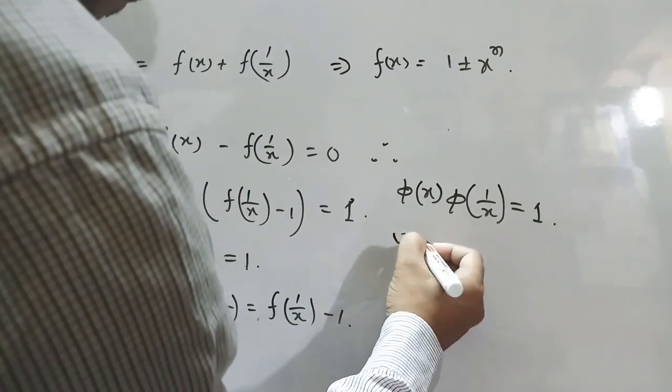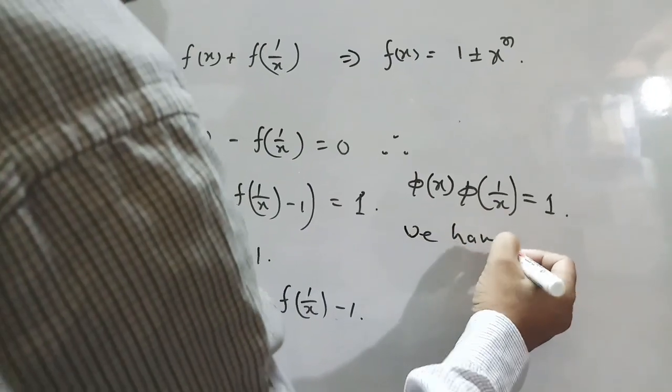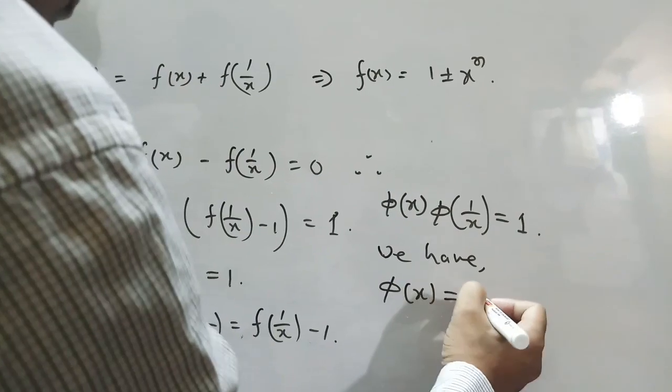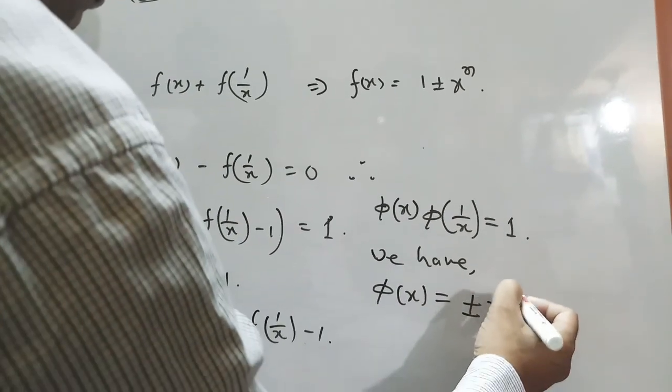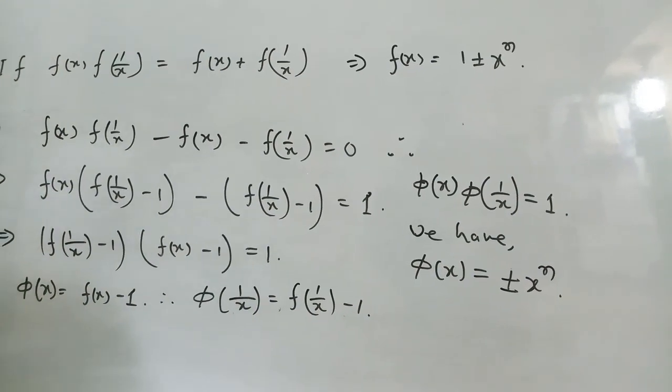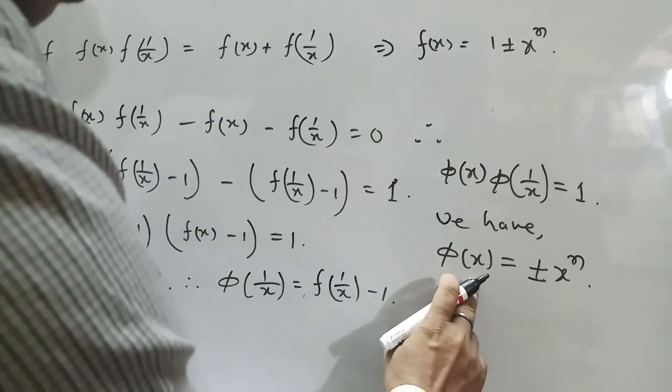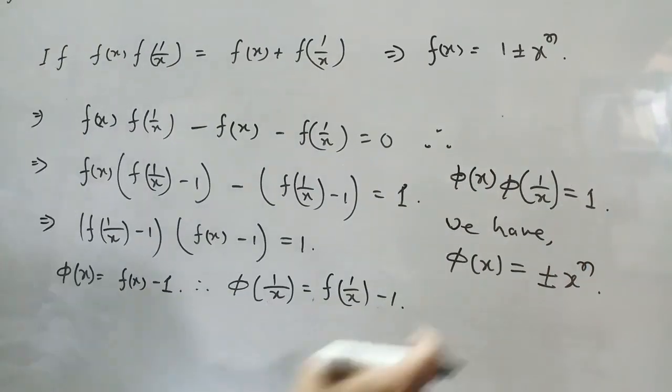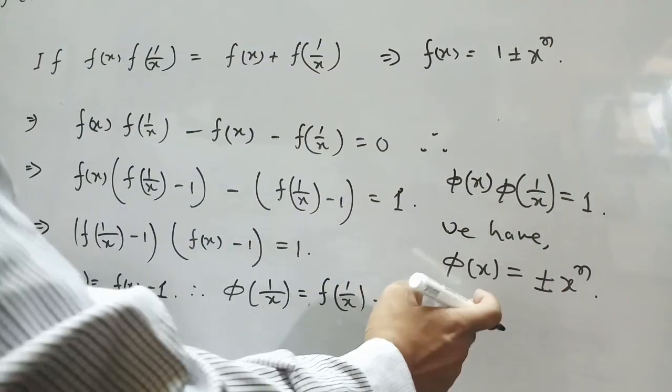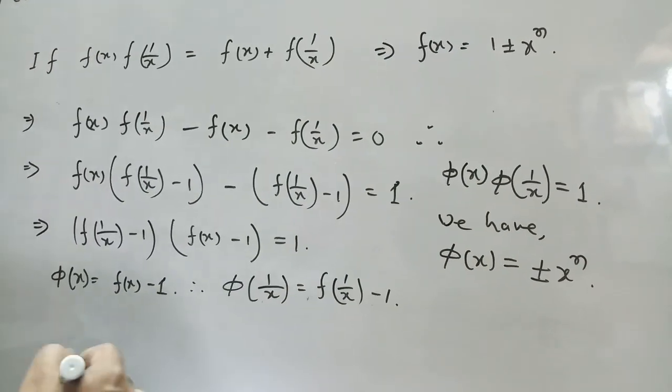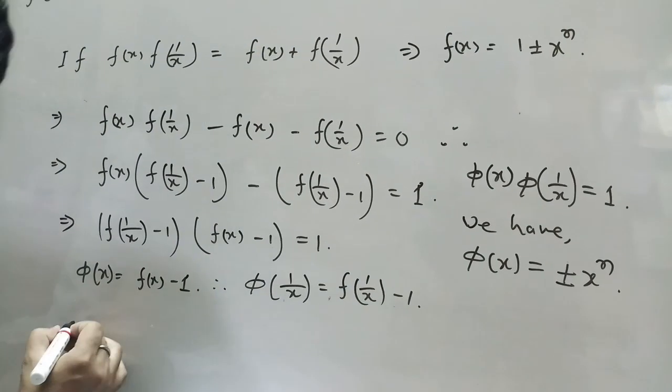φ(x) multiplied by φ(1/x) equal to 1. Therefore, we have φ(x) equal to plus minus x to the power n. That is, this relation equal to 1 is possible only when value of φ(x) is plus minus x power n.